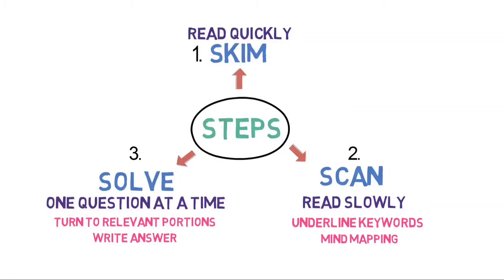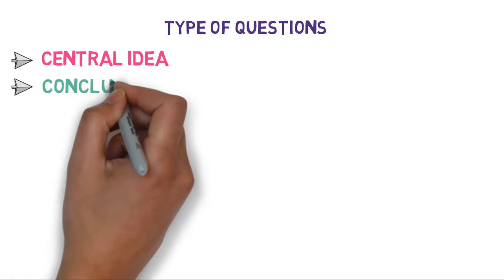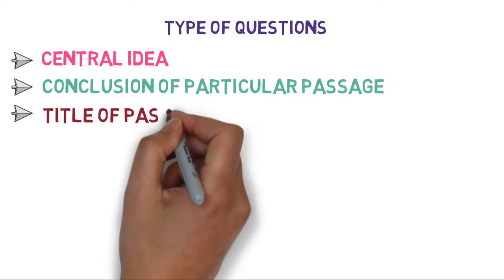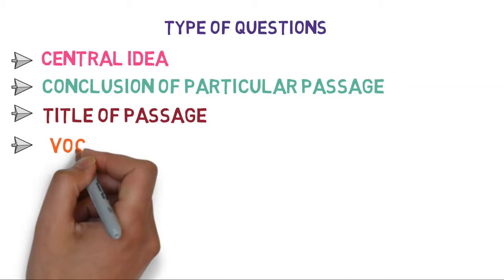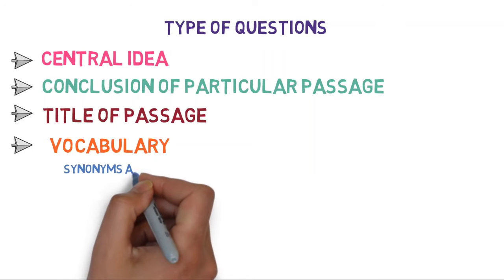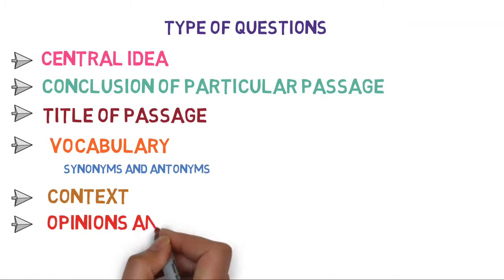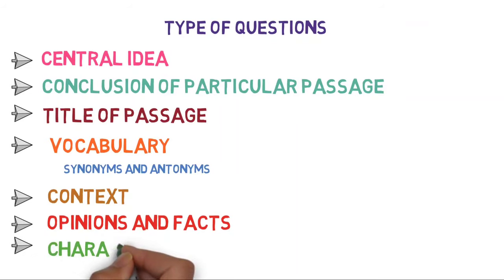Now that you've understood the steps, let's understand the types of questions that might come in reading comprehension exercises: questions related to the central idea of the passage; questions related to the conclusion of a particular paragraph; questions related to providing a suitable title; questions related to vocabulary like synonyms and antonyms; questions on the context of the passage; questions based on opinions and facts; and questions about the characteristics of the writer. These are some of the types of questions that might come in any reading comprehension.